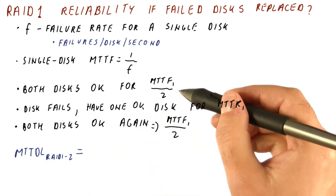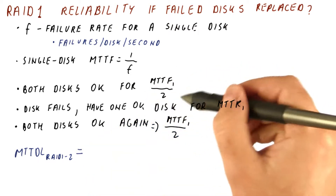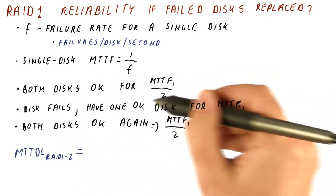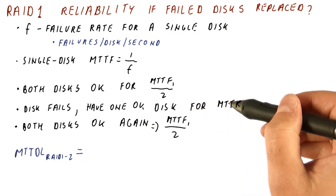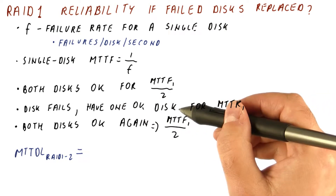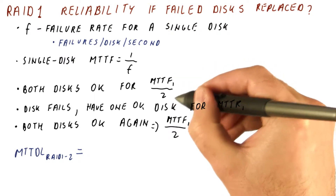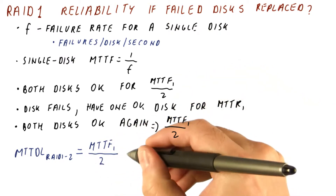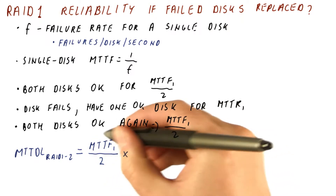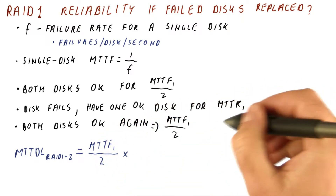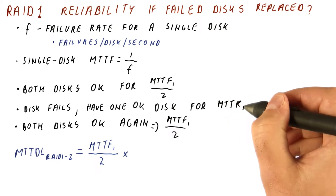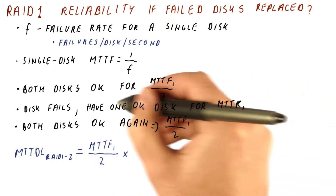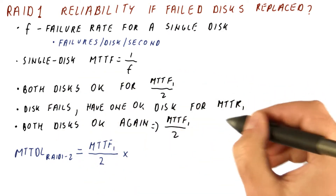The question really is: how many times can we go through this cycle until we encounter the period when a single disk has failed, and during the time it takes to replace it, another disk also fails? It equals the length of this interval — how long we survive with both disks working — times how many times we can get through this before we encounter a repair period where the second disk fails during it. So the question is: what is the probability of the second disk failing during the time to repair one disk?